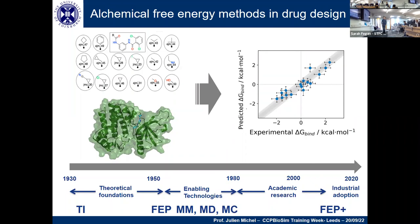In terms of the development of these methods, the theoretical foundations were laid around 1930 to 1950. We had thermodynamic integration around 1935, the Zwanzig equation around 1950. Between 1950 and 1980, we had enabling technologies: development of molecular dynamics, Monte Carlo, molecular mechanics. From about 1980 onwards, this became the realm of academic research. The term alchemical came from 1984. And now with increasing computational resources and development of methodology, this is becoming something used in industry, particularly relative binding free energy calculations, but also to an extent absolute.